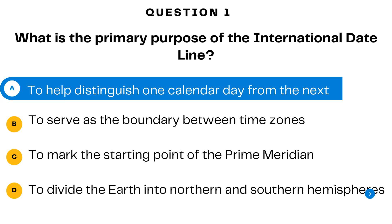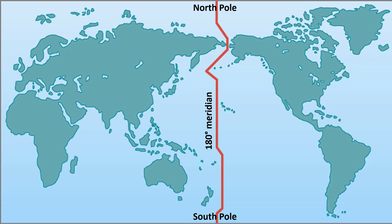The primary purpose of the international dateline is to help distinguish one calendar day from the next, because it serves as the point where the date changes by one day when it is crossed.